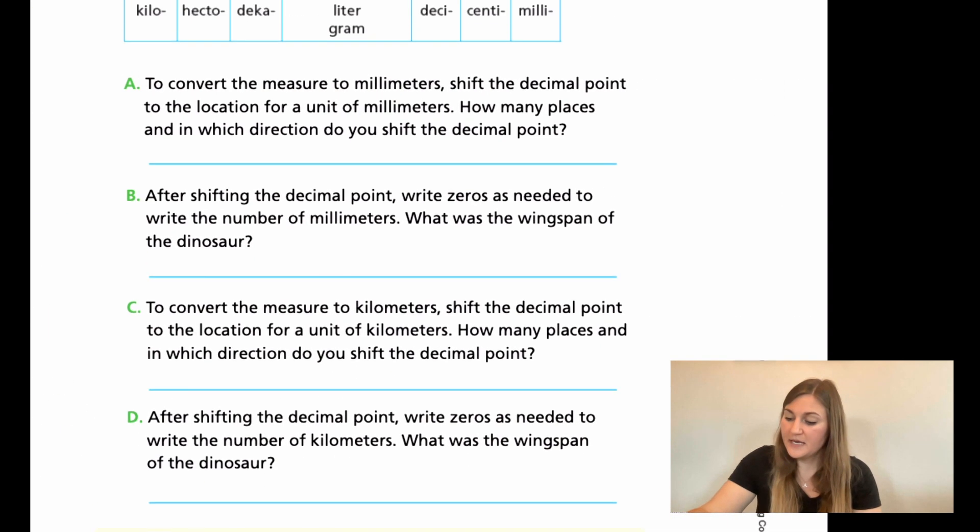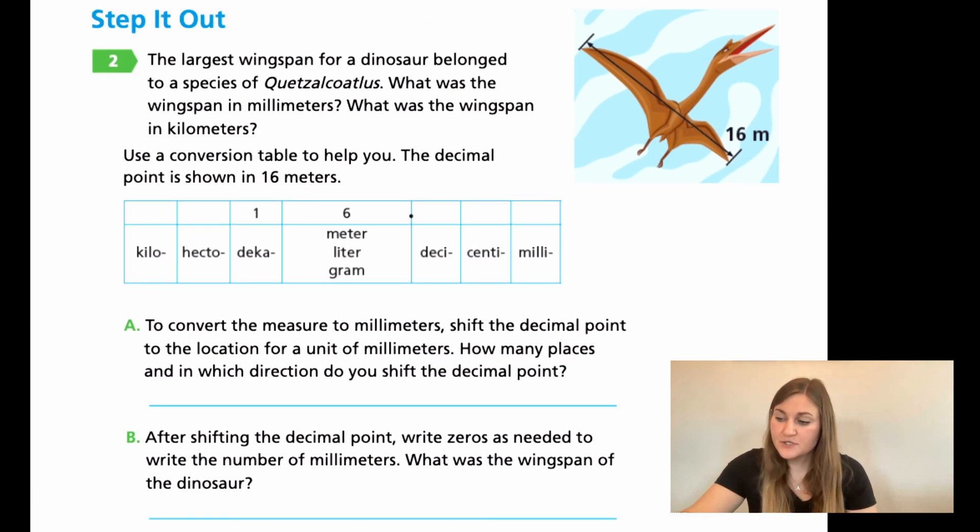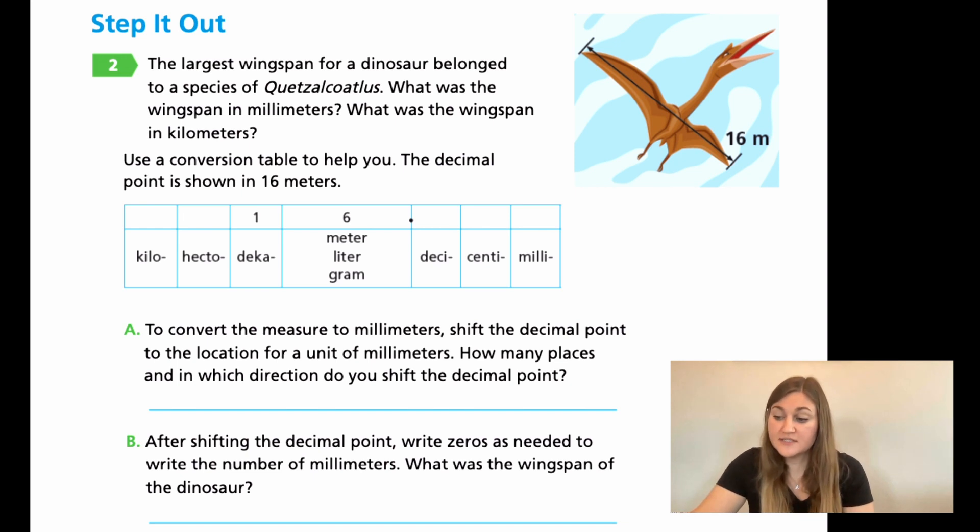All right, let's go ahead and move the page. So we're on page 456. Number two, it says the wingspan for a dinosaur, I'm sorry, the largest wingspan for a dinosaur belonged to a species of Quetzalcoatlus. What was the wingspan in millimeters? And what was the wingspan in kilometers? So again, it gives us this same measurement chart below a conversion table. And it already put the one in the six in for us because over to the right, it shows us a picture of that dinosaur. And it says that it's 16 meters. Remember, each digit needs its own place value. So it already has it kind of set up for us with that decimal at the end of the 16.